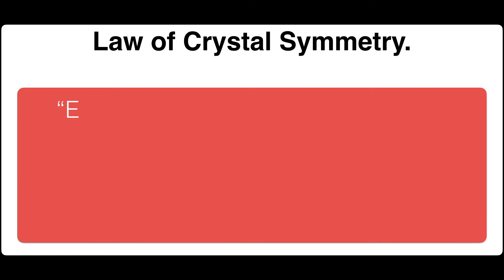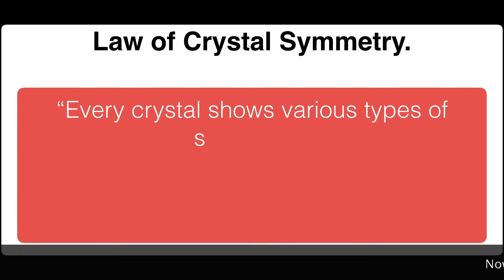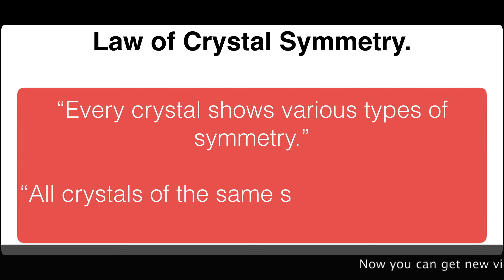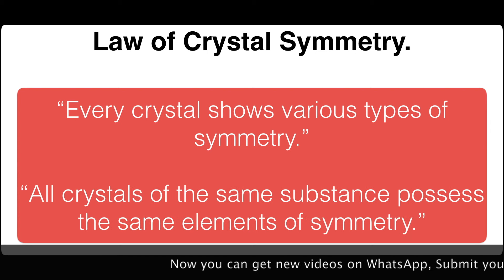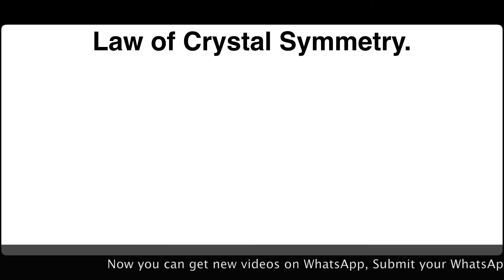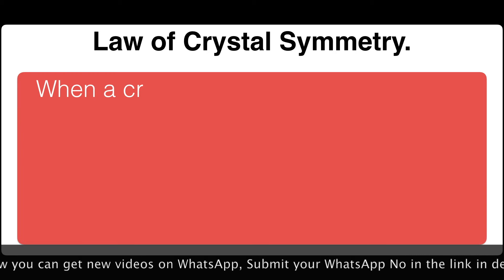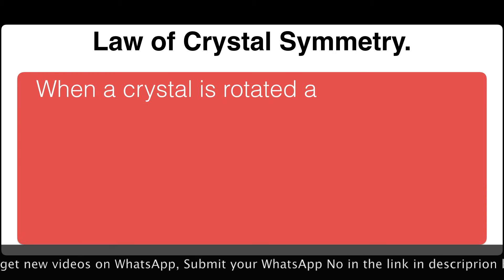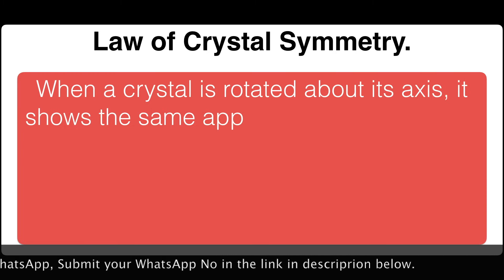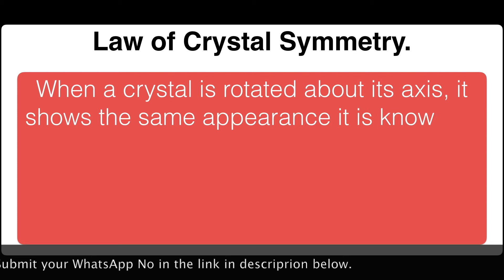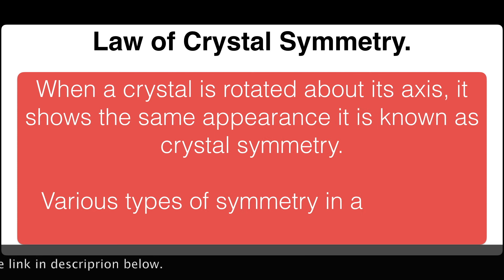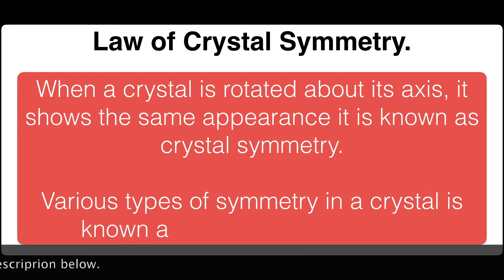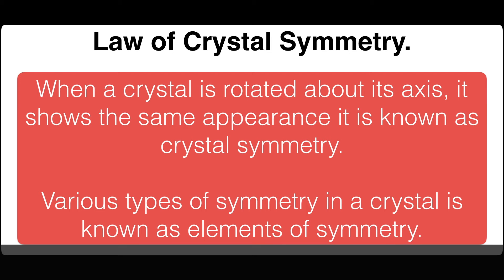Loss of crystal symmetry. Every crystal shows various types of symmetry. All crystals of the same substance possess the same elements of symmetry. When a crystal is rotated about its axis it shows the same appearance — this is known as crystal symmetry. The various types of symmetry in a crystal are known as elements of symmetry.